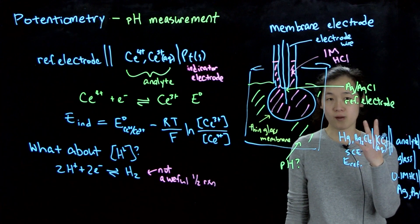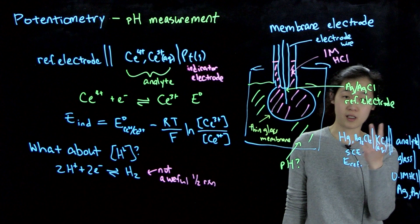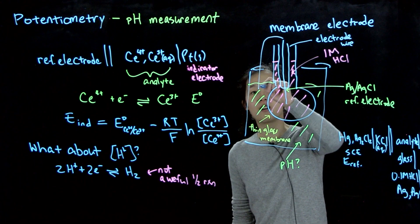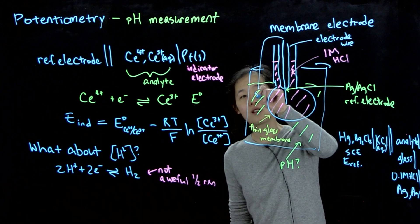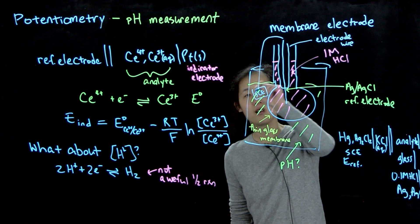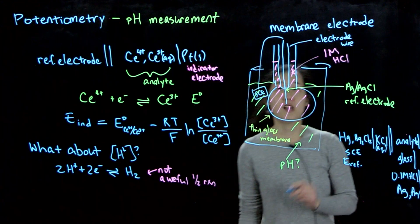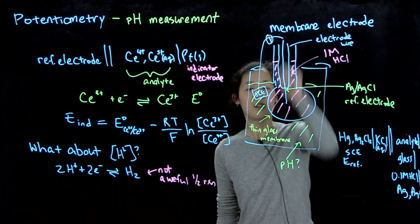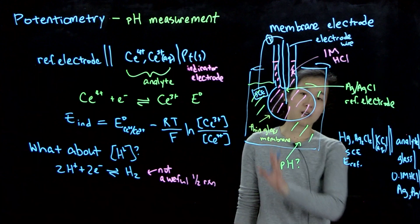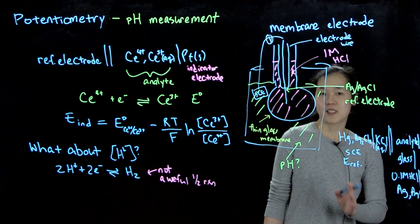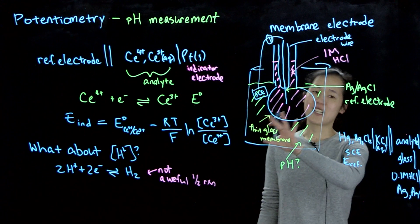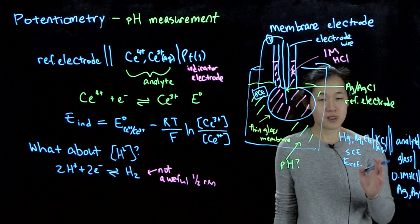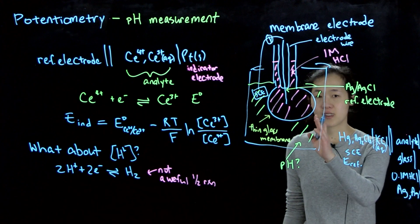We have two things that we stick in the solution: the glass membrane indicator electrode, as well as our SCE reference electrode. Our voltmeter, of course, is still connected up top. So this is a simplified diagram of any modern pH meter, which still uses the same principles of sensing.